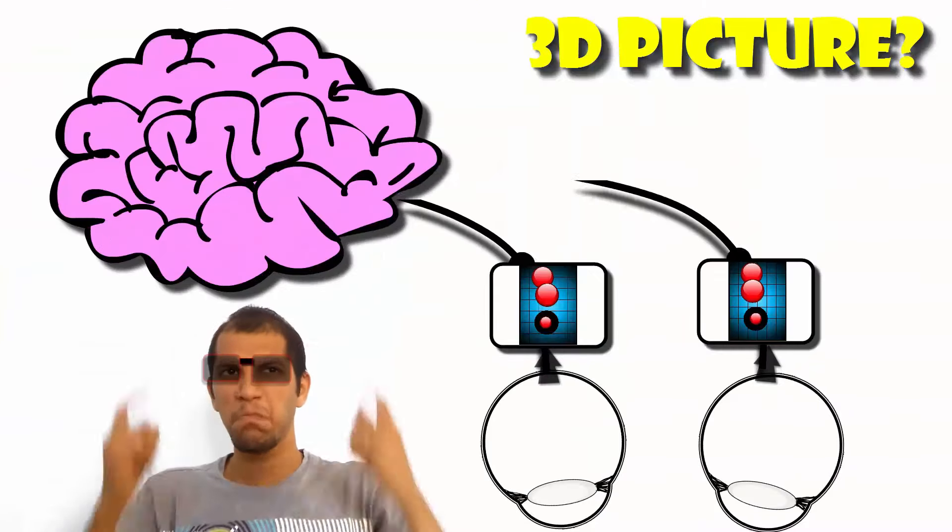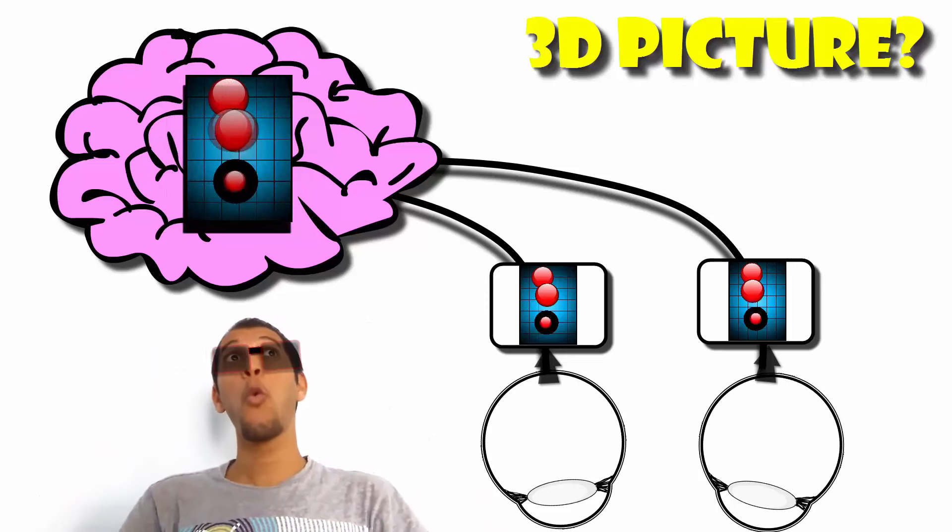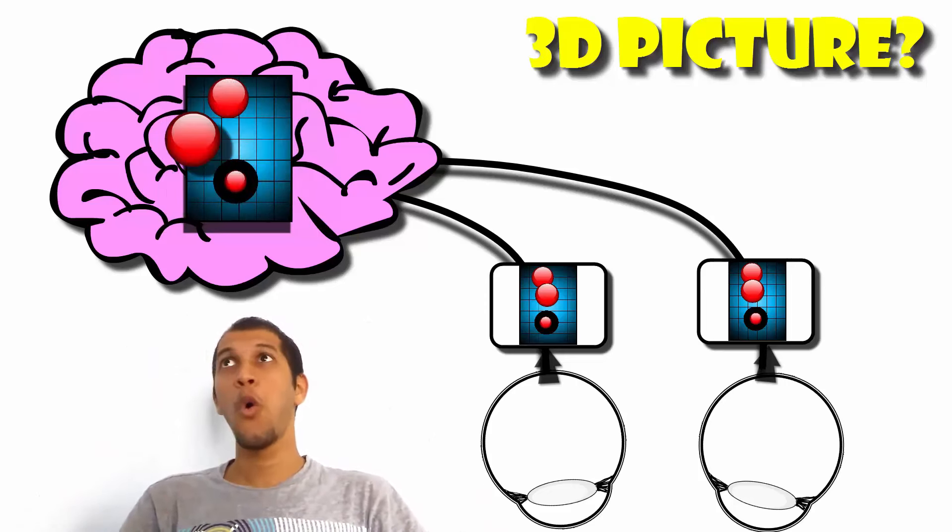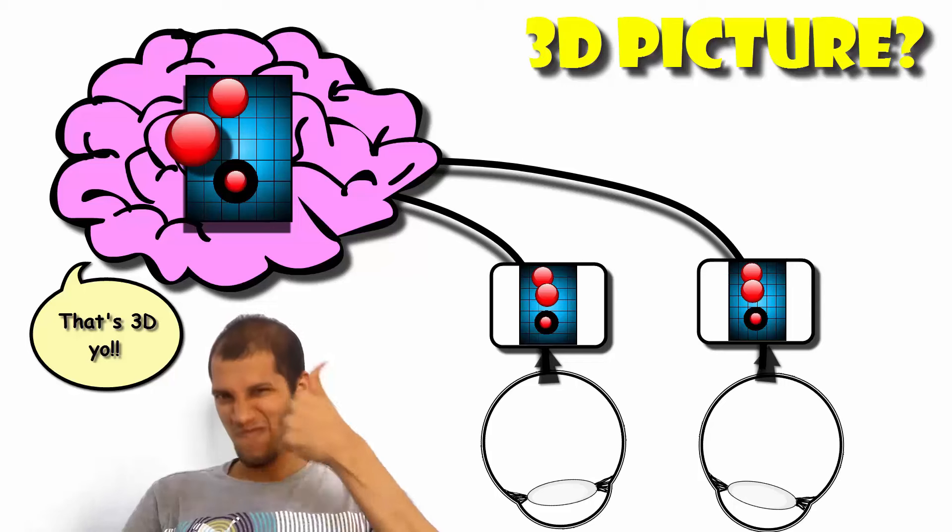Once this information is fed to your brain, it'll be fooled into thinking that this shift happened because the objects are at different distances. Or in other words, your brain now sees 3D.